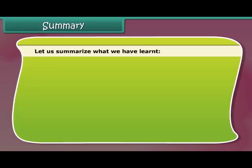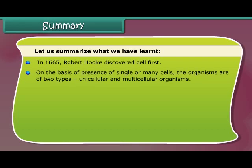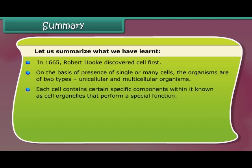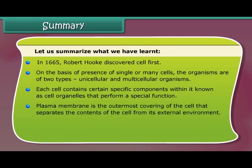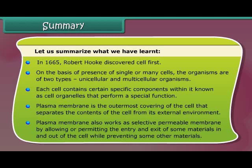In 1665, Robert Hooke discovered the cell. On the basis of the presence of single or many cells, organisms are of two types: unicellular and multicellular. Each cell contains certain specific components known as cell organelles that perform special functions. The plasma membrane is the outermost covering of the cell, separating its contents from the external environment. It also works as a selectively permeable membrane, allowing entry and exit of some materials while preventing others.